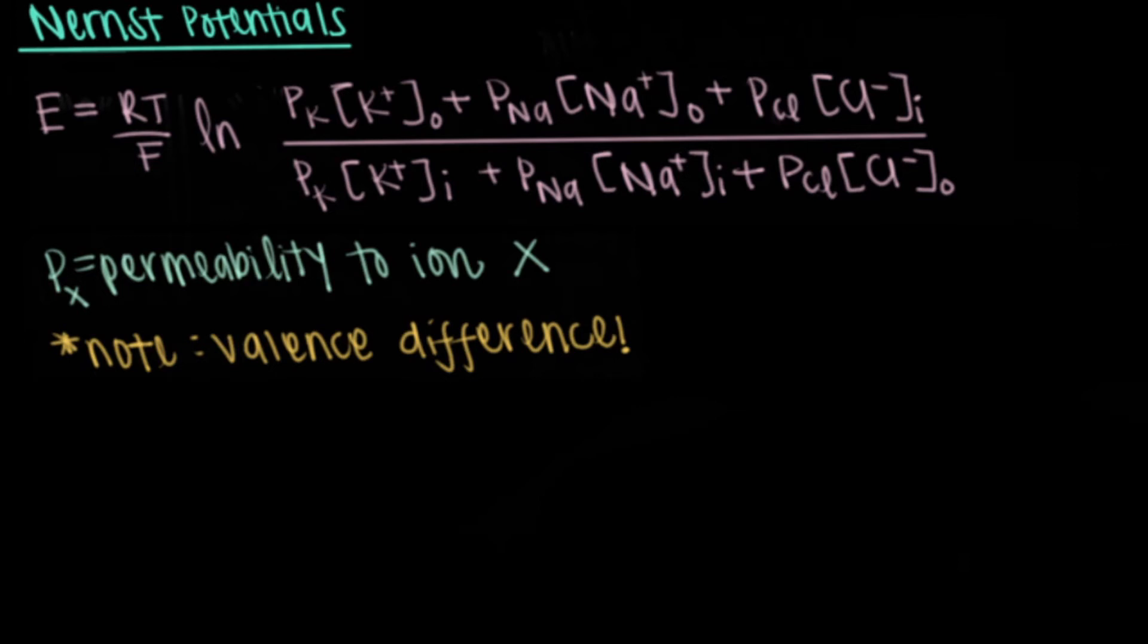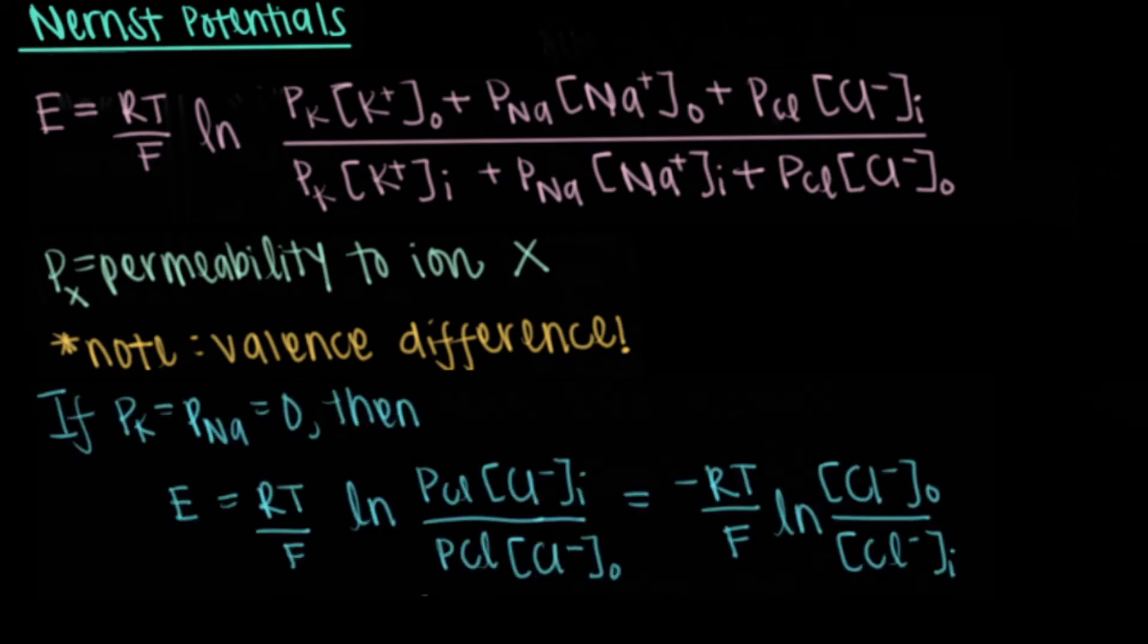In an example, say that the cell membrane doesn't allow potassium or sodium ions to pass through and the permeability is zero for each ion. Then, the equation becomes E equals RT divided by F times the natural log of the permeability of chlorine times the inside concentration of chlorine divided by the permeability of chlorine times the outside concentration of chlorine. This eliminates the permeability value since it gets canceled out in the numerator and denominator.